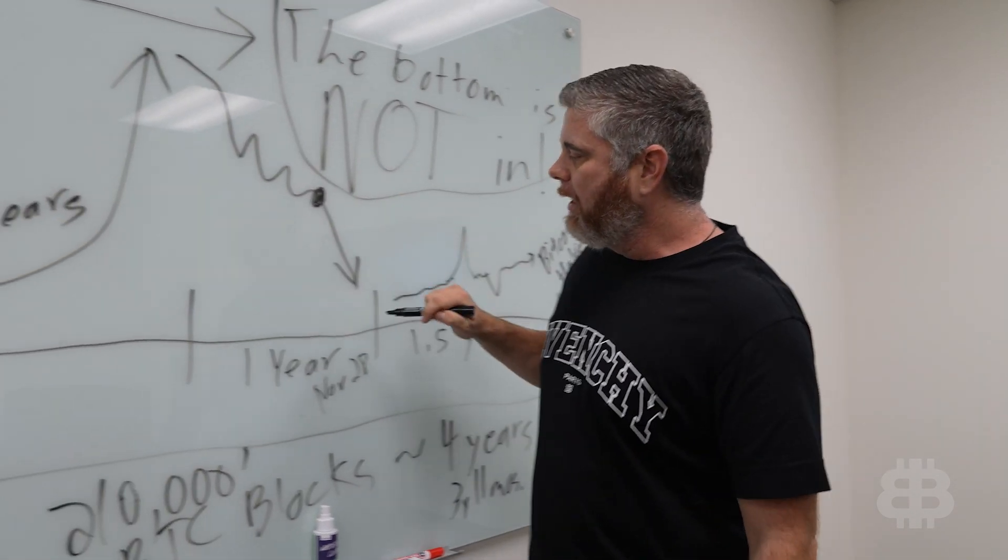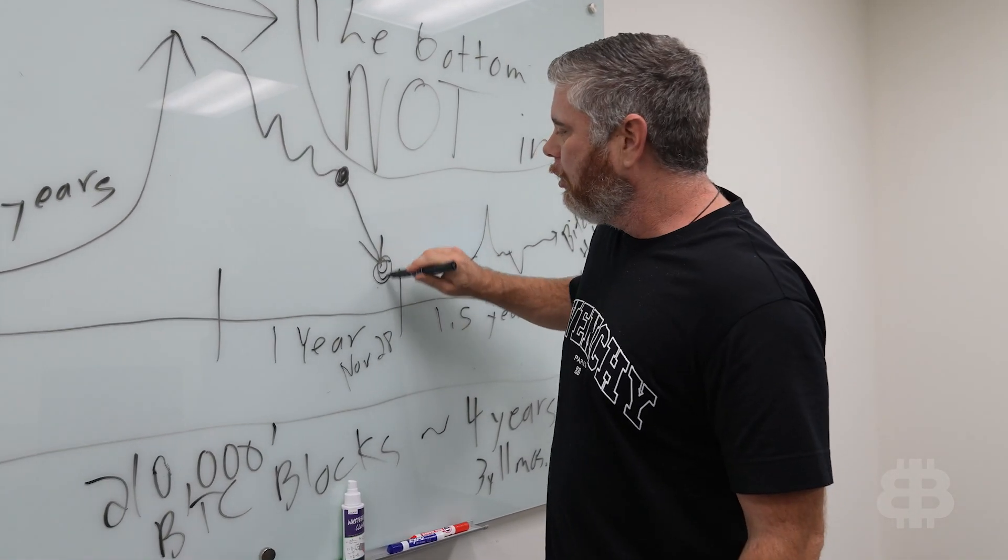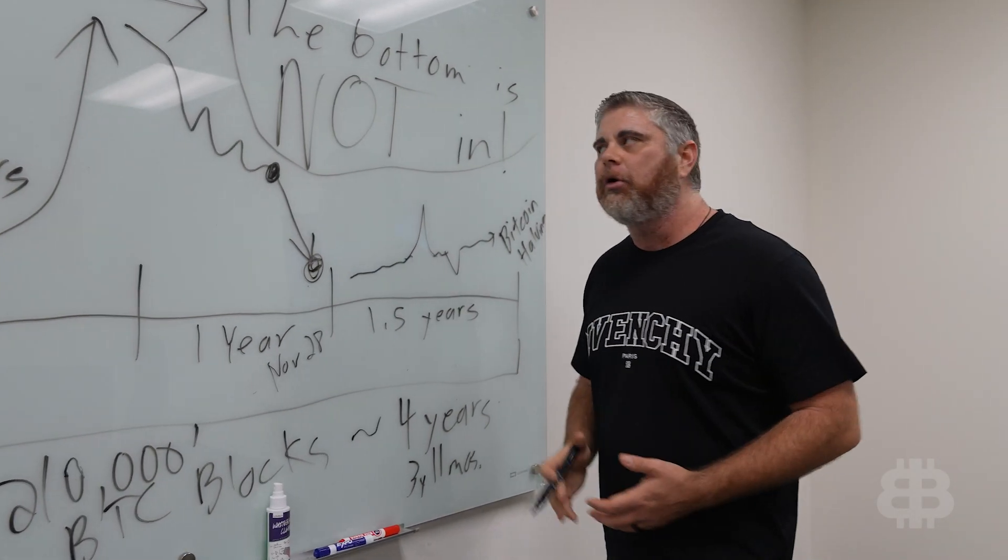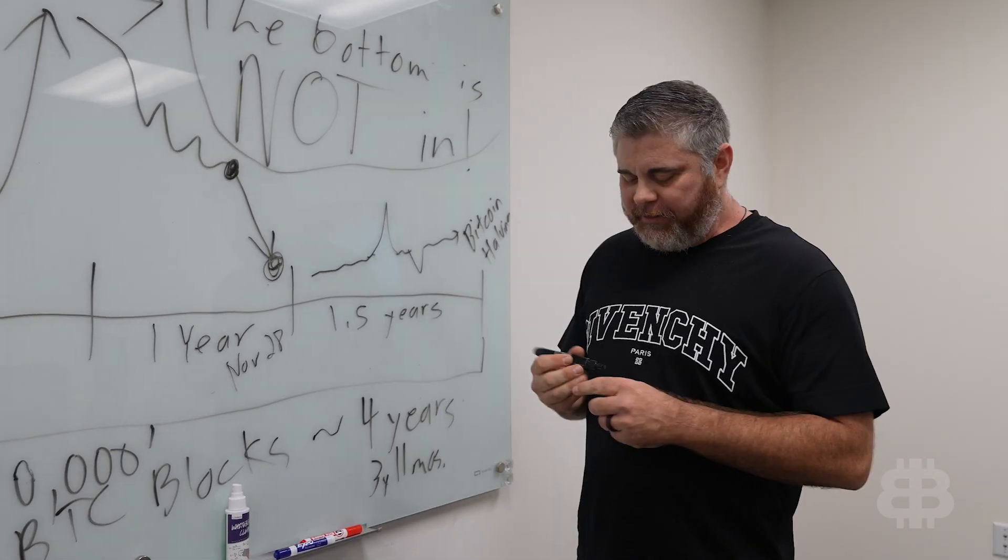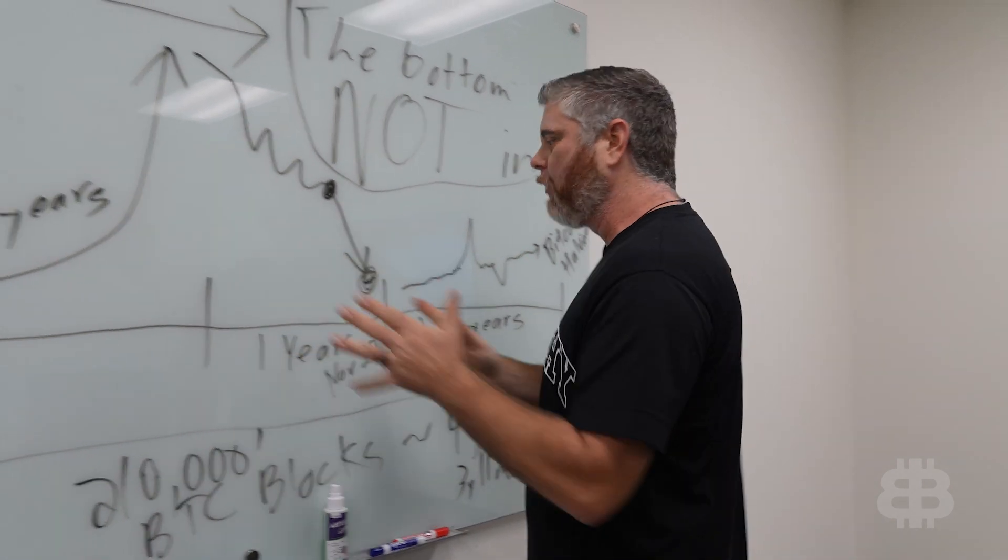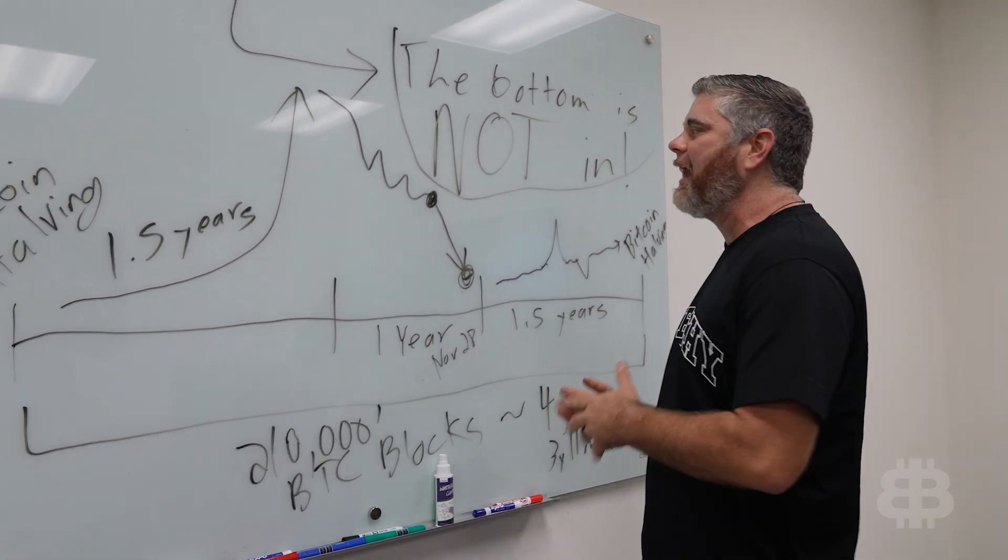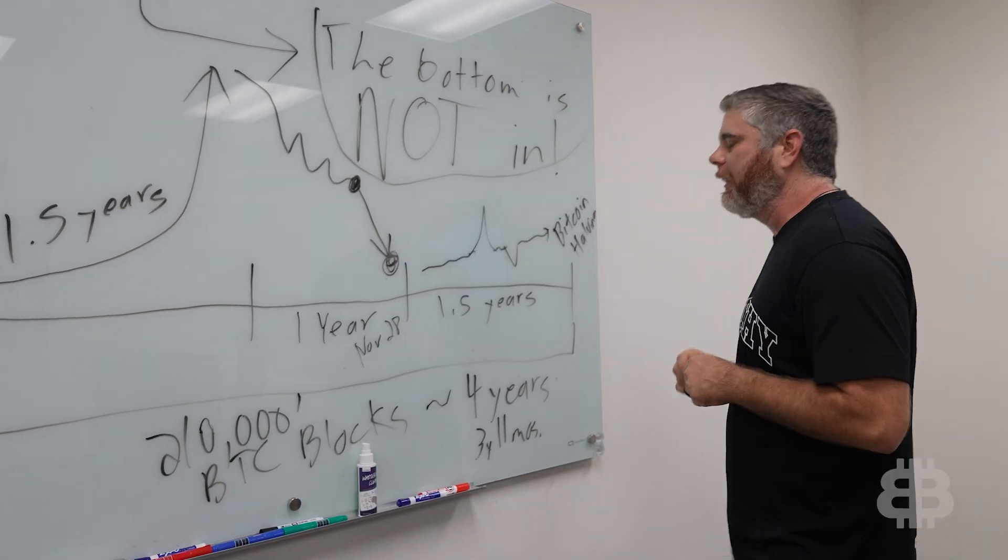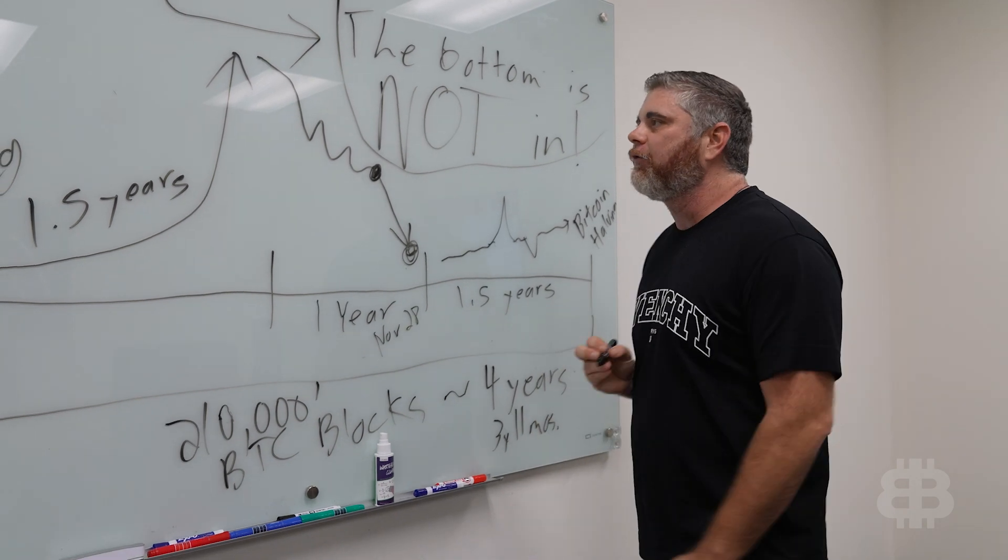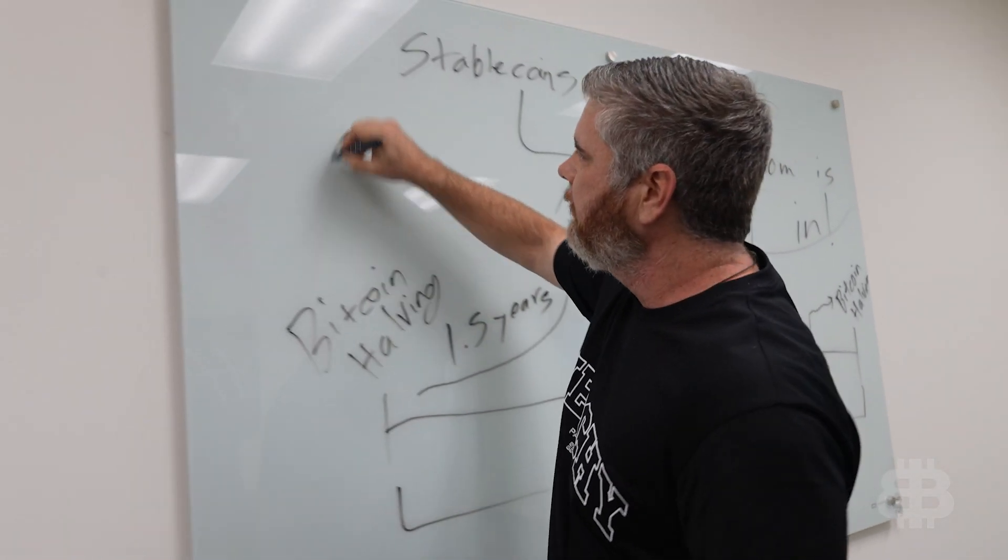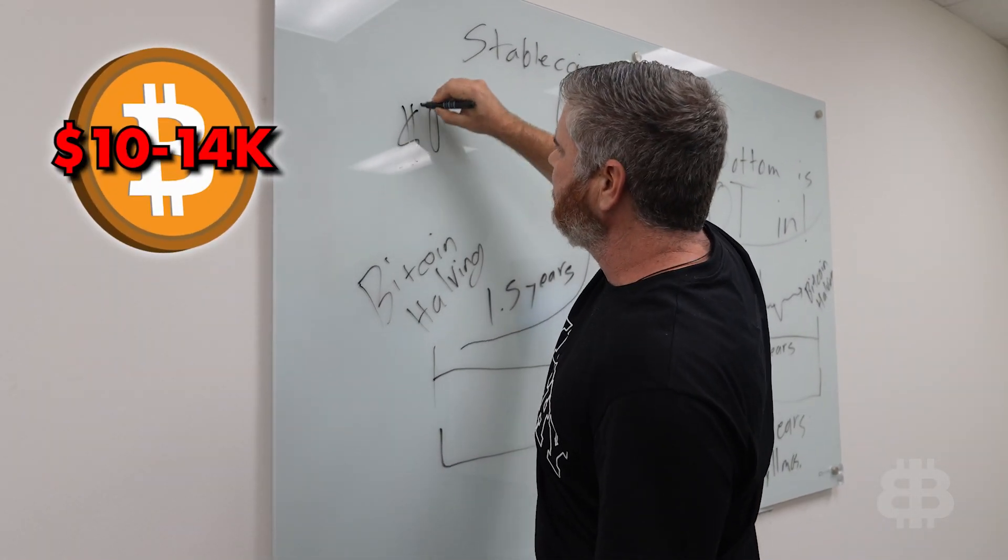So we are not yet here. When we get here, this is where we will consider deploying our capital. Now, obviously, these four-year cycles, while the time frames have matched pretty much exactly, you know, the numbers have fluctuated a bit. So what are we looking for? We are looking for Bitcoin to be somewhere in the $10K to $14K range.